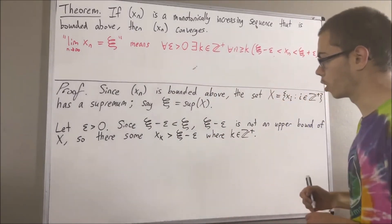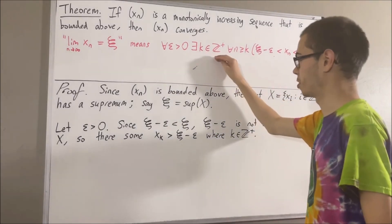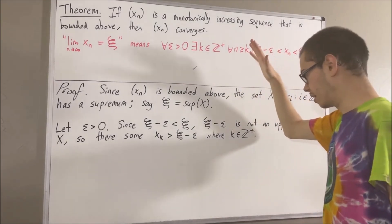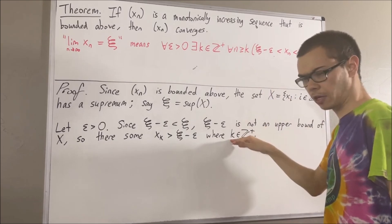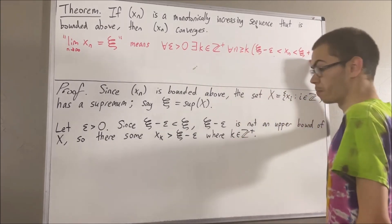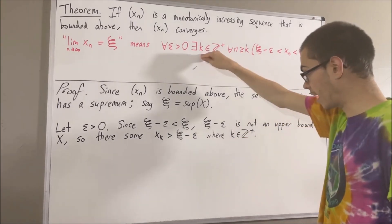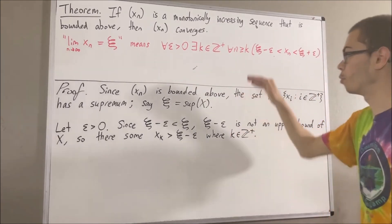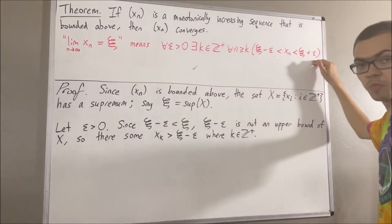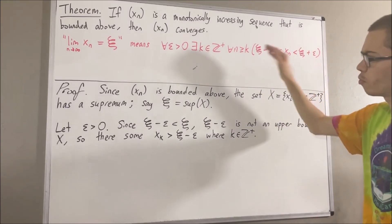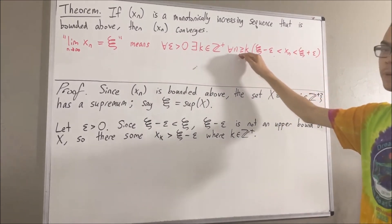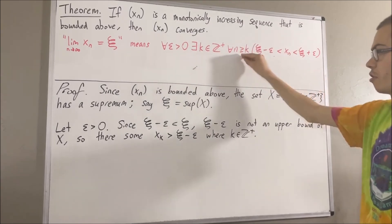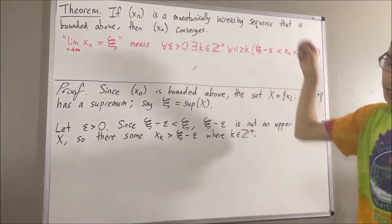Now, remember, our goal has been to find a positive integer such that this is true. And our claim is that the positive integer k that we have here will make this statement true. So, let's take k to be that k, and we proceed to prove that this statement is true. Since we're trying to prove a statement about every positive integer greater than or equal to k, let's give ourselves an arbitrary positive integer greater than or equal to k. I'll call it n.